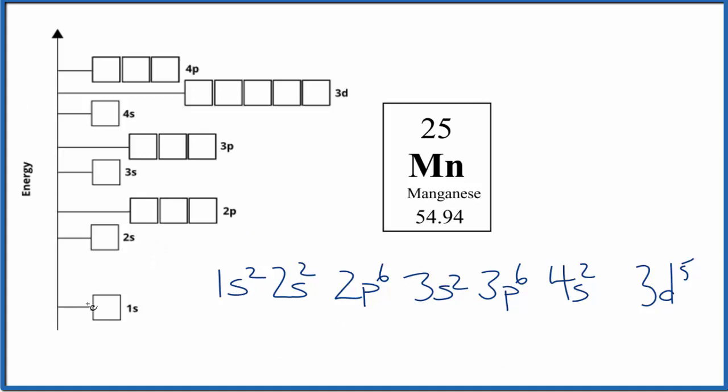So we'll go 1s², we put our two electrons opposite directions, 2s², and then we get to the 2p⁶, and we spread them out, and then we pair them up. 3s², 3p⁶, 4s², and then the 3d⁵, we spread them out like this.